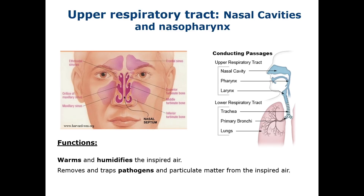The larynx, which we will not cover here, is also part of the upper respiratory tract. Its main functions are to produce sound and to close the trachea during swallowing to prevent food and saliva from entering the airway. Much of the larynx contains respiratory epithelium, except for the true vocal cords, which are lined with stratified squamous non-keratinized epithelium to protect against abrasion and desiccation from air movements.